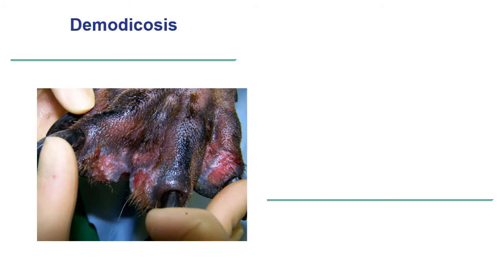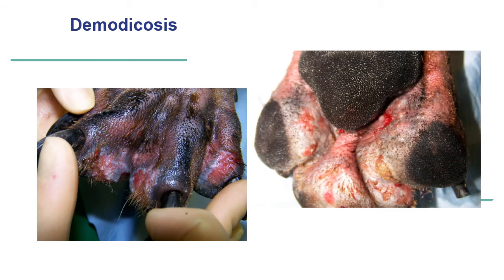This is a very severe case of pododemodicosis in a young Doberman, with several areas of interdigital ulceration, some nodular lesions, and on the ventral aspect of the foot, noticeable oedema and ulcerated nodules involving the interdigital web. It is very important to highlight the involvement of the haired skin, whilst the non-haired skin such as the footpads is preserved.